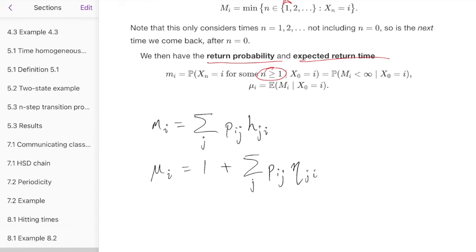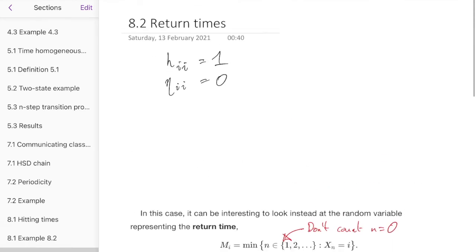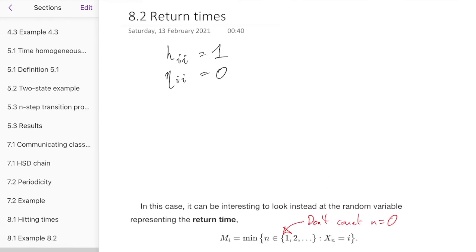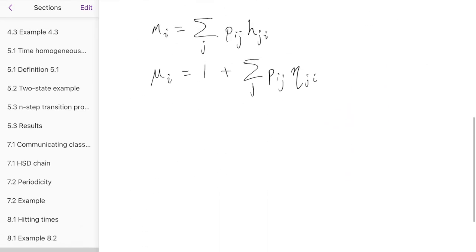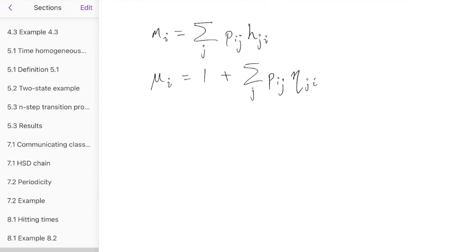I don't think we need to see another example. It's basically exactly the same as before. This is just to say that when you're dealing with a state to itself, take care of whether you want the hitting probability and expected hitting time, in which case you're already there, and it's a bit boring, but easy, or whether I actually want the return, as in the probability that I come back, or the expected time until I come back the next time.